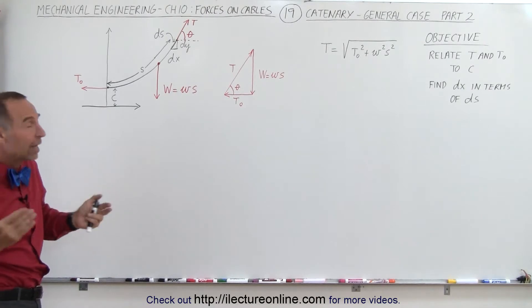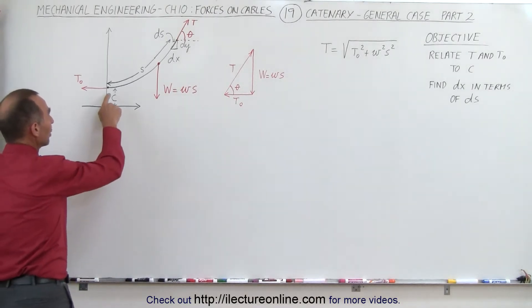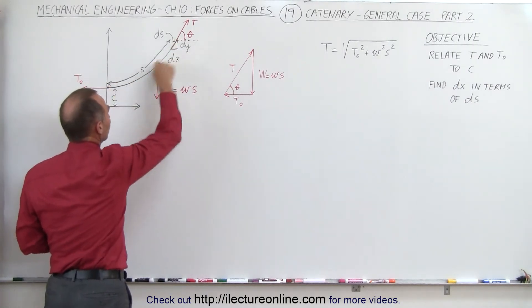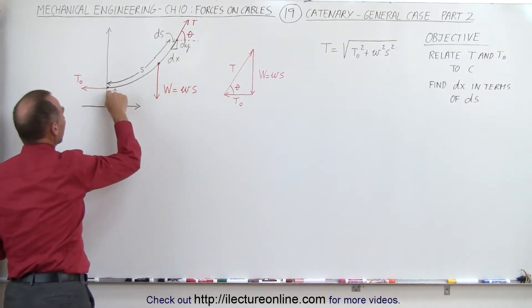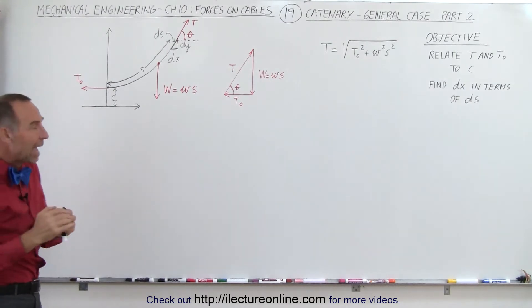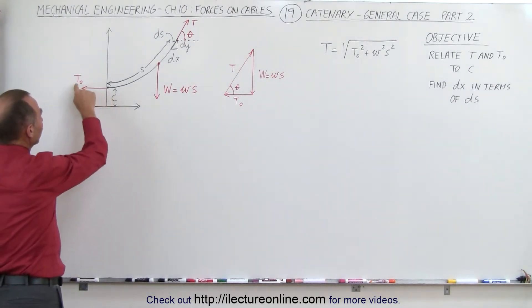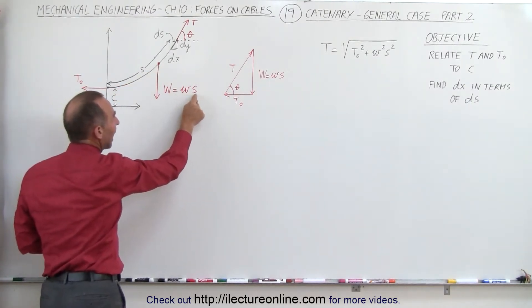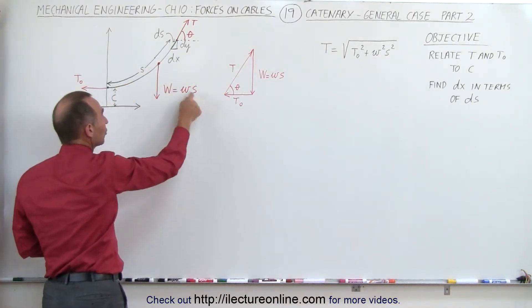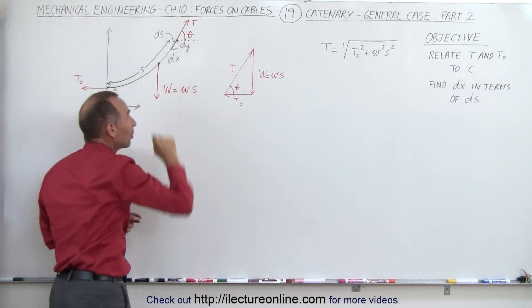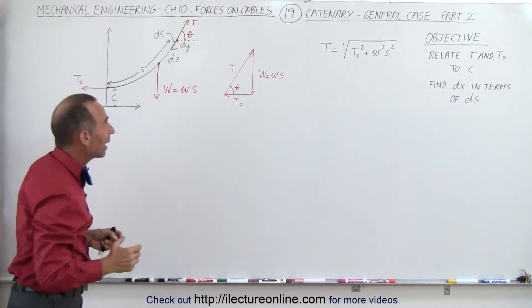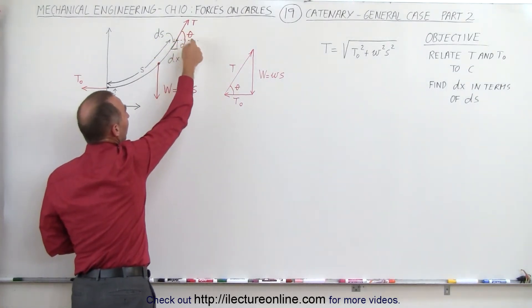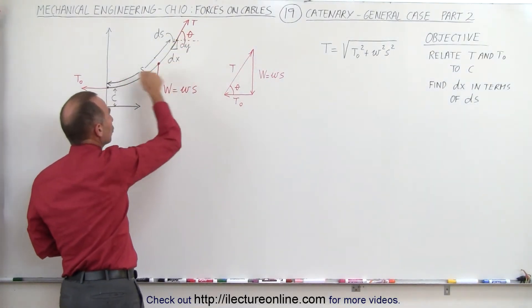There are three forces acting on a section of cable. Notice the lowest point on the cable and the highest point on this particular section. At the lowest point, the only tension is the horizontal tension, which we call T sub knot. We have the weight of the cable, which is the weight per unit length times the arc length S of that section. And then we have the tension T at the end of the cable, which depends upon the angle and the other two parameters.